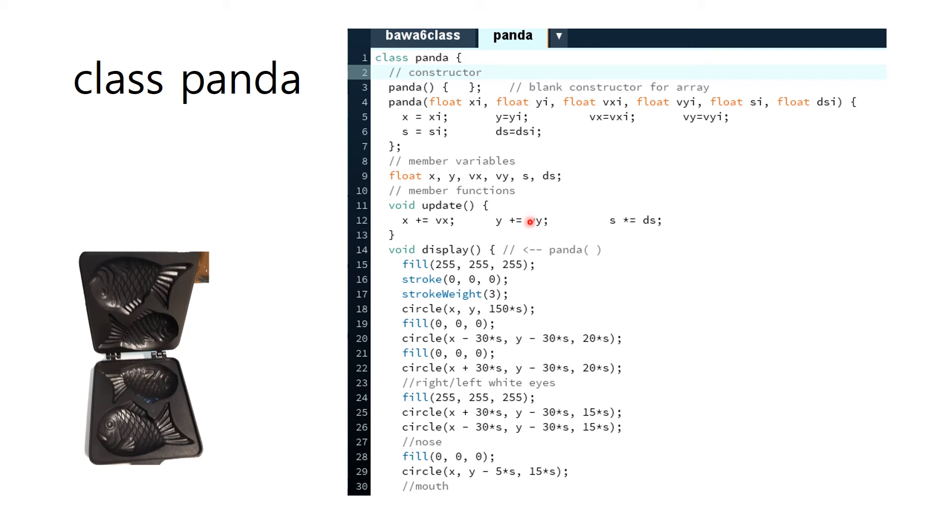The member function is a function that is commonly implemented in Pandas. Here, the update function serves to change the location variable and the size variable every time. And the function display is a function that draws a Panda according to the updated variables.